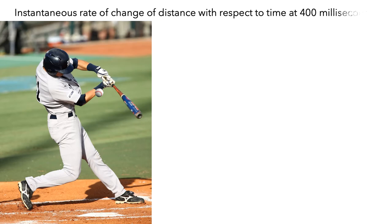We'll look at the velocity of a baseball after it is thrown and passes by the batter. In particular, we'll try to graph the instantaneous rate of change of distance with respect to time at 400 milliseconds after the ball has been thrown.